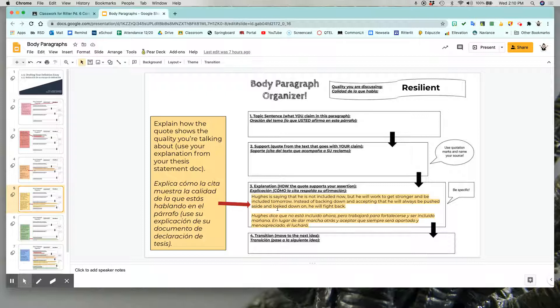The next step is to explain how your quote supports the word up here in your flag. So how does this quote show that Americans are resilient? Again, if you did your brainstorming and your thesis, you should have your explanation on both of those graphic organizers. So you can copy and paste what you had right into here and then look at it to see if you think it works.